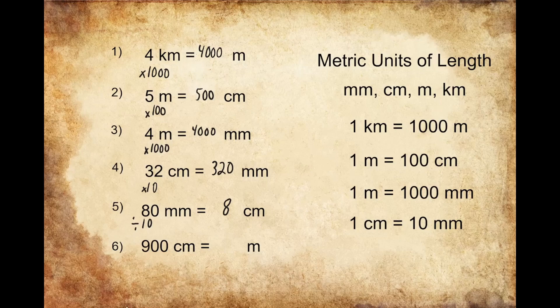For question number six, we're being asked to convert 900 centimeters into meters. One meter is equal to 100 centimeters, so if I'm looking to convert centimeters into meters, I need to figure out how many groups of 100 I can make out of 900. I'm going to divide 900 by 100, which gives me 9. So 900 centimeters converts into 9 meters.